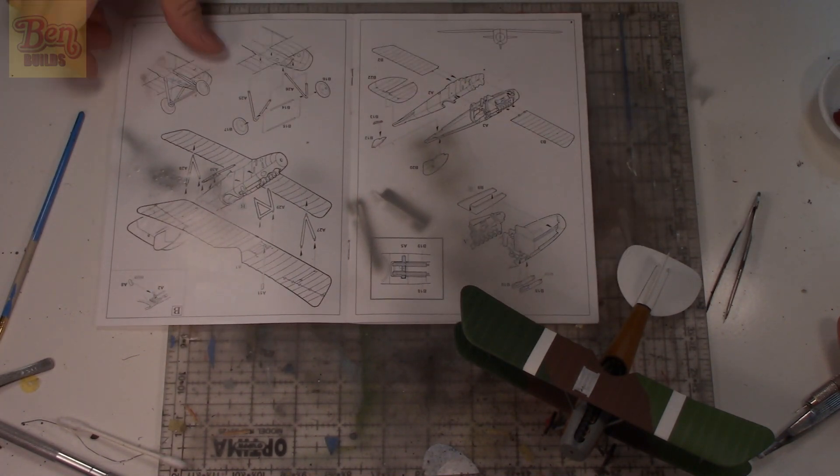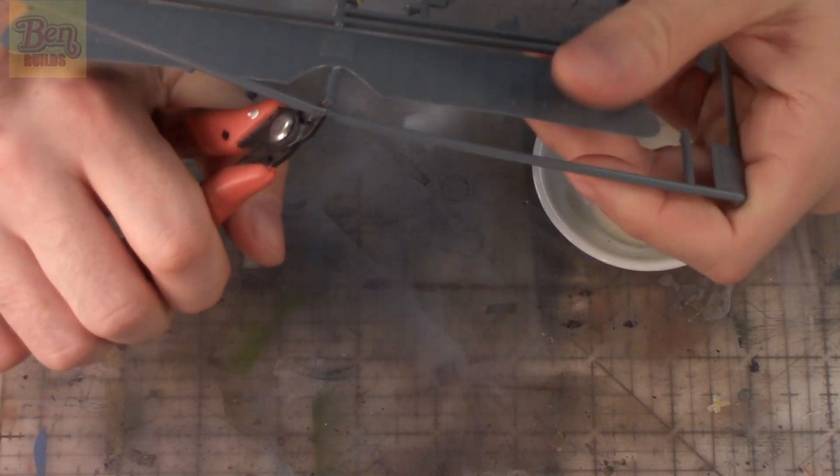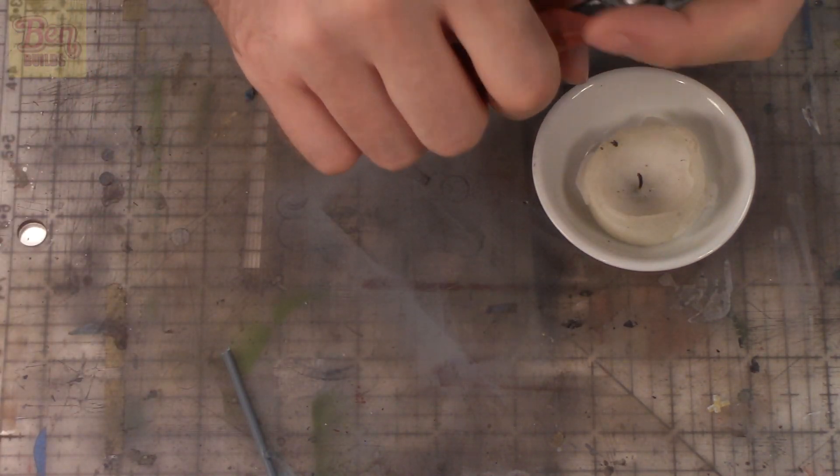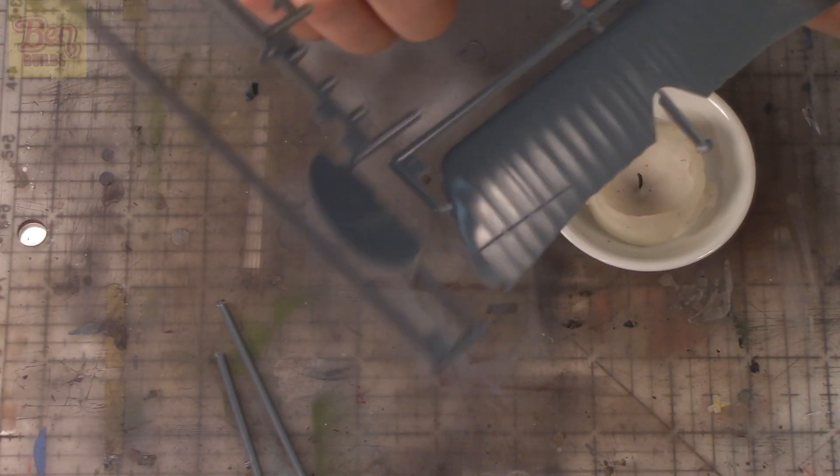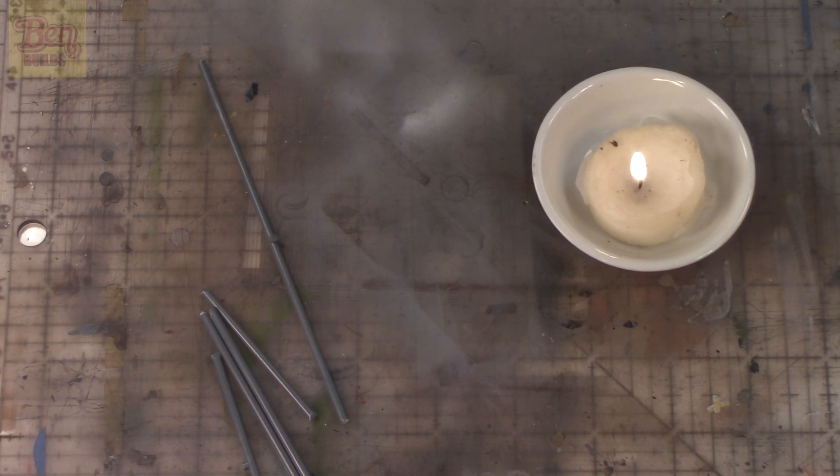I find this to be odd. So we're going to have to make them. In order to make these parts, I'm going to stretch some sprue. To do that, we need some pieces of sprue. I'm cutting these off the waste product from the Albatross. We need a candle, so I'm going to light that bad boy up.